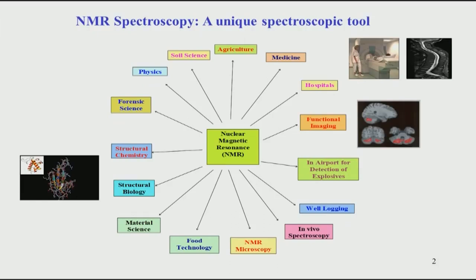For example, it is applicable in agriculture and medicine. A very popular application is magnetic resonance imaging, which is where MRI is used. NMR spectroscopy is also used in different areas like NMR microscopy and food technology. In fact, testing many food products in companies abroad is done by NMR spectroscopy. But the major focus of this course will be on structural biology and structural chemistry — two major applications which have grown enormously in the last 20 years.